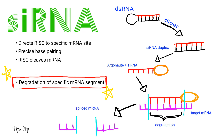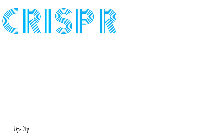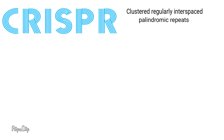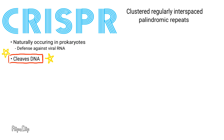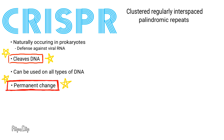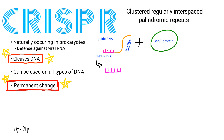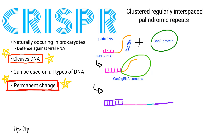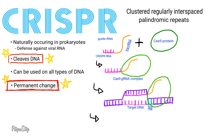Another form of gene editing is CRISPR technology. CRISPR stands for clustered regularly interspaced palindromic repeats and naturally occurs in prokaryotic cells. CRISPR cleaves DNA instead of RNA and can be used on all types of DNA. Unlike RNAi, this method results in a permanent change. This method uses a guide RNA consisting of CRISPR RNA and tracer RNA and a Cas9 protein. The Cas9 cleaves the DNA up until the PAM sequence, and the altered DNA then repairs itself.